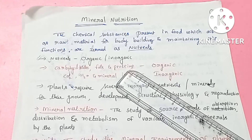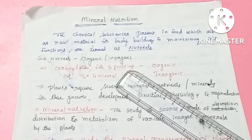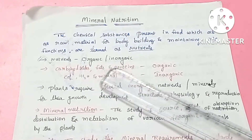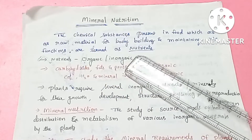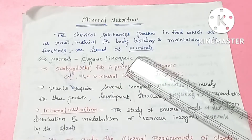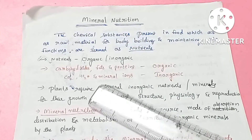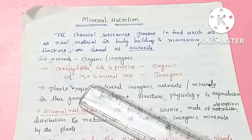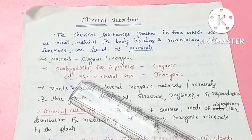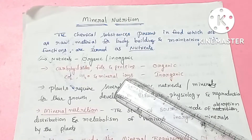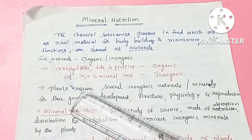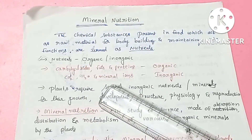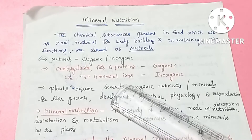That is called a nutrient. What are nutrients? They can be in organic or inorganic form. Organic nutrients include, for example, carbohydrates, fats, and proteins. Inorganic form includes carbon dioxide, water, and other mineral salts. These are also in inorganic form.